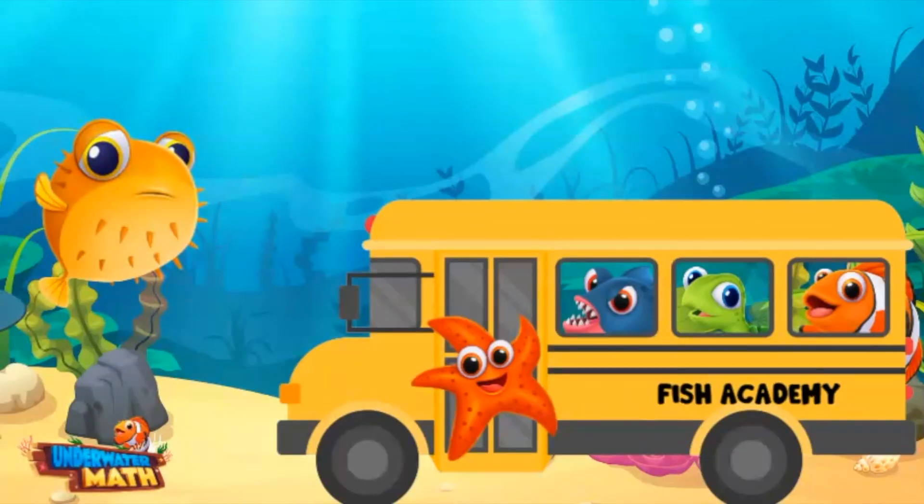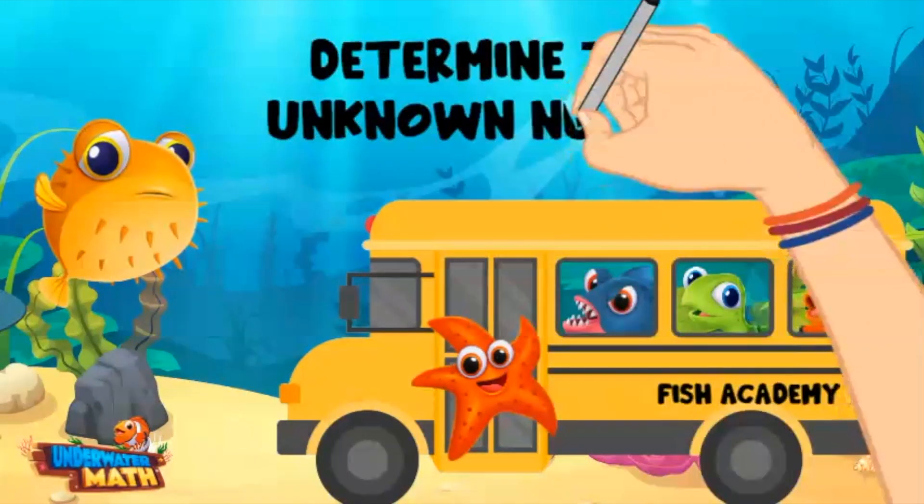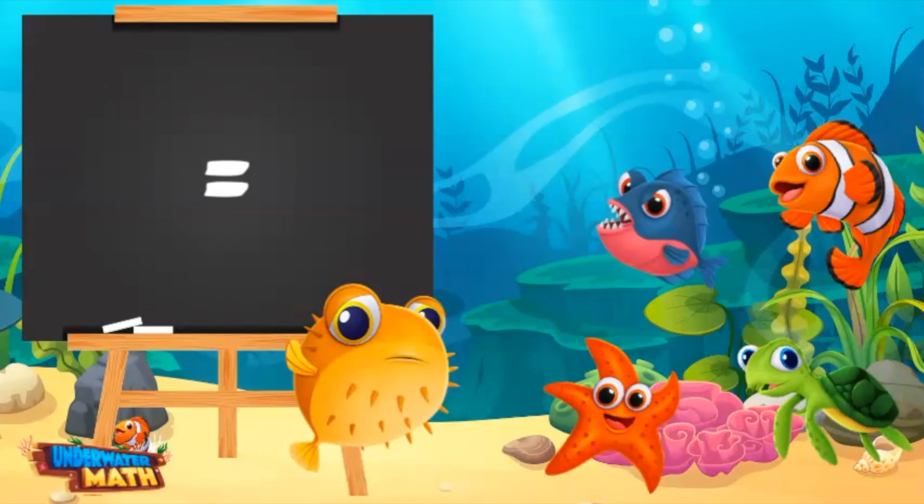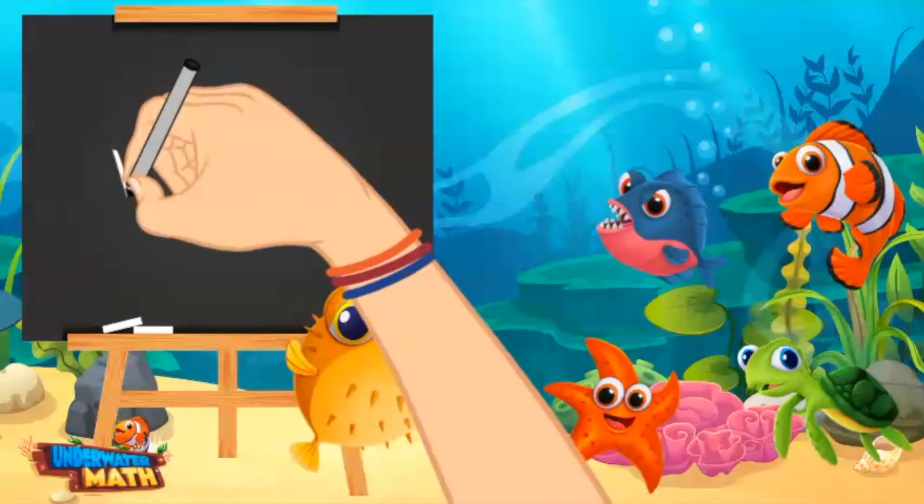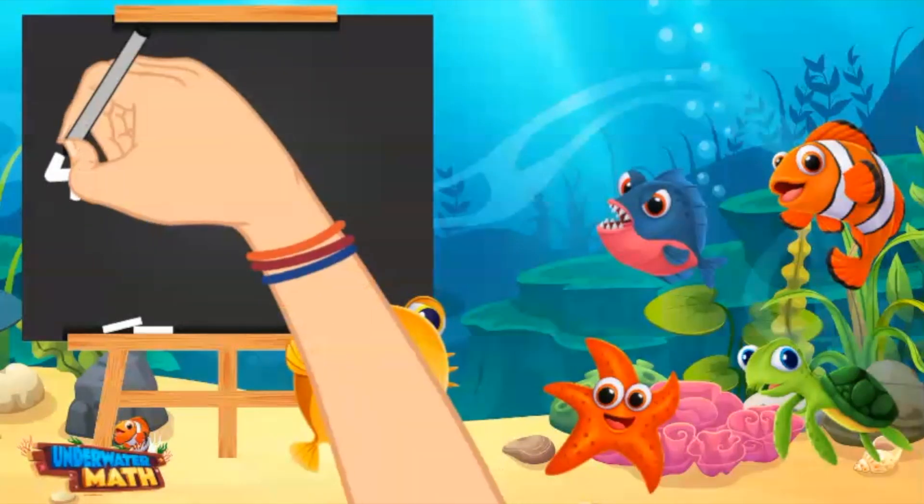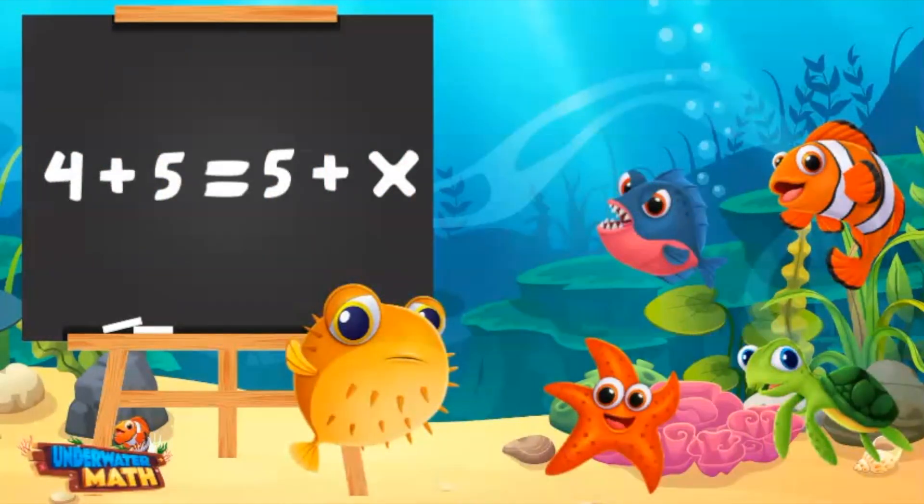Welcome class to another day of learning. Today's topic is determining unknown numbers. Who knows what this sign means? That's an equal sign. It is used in equations. The right side of the equation and the left side of the equation must have the same value. Right you are. Here is an equation: 4 plus 5 equals 5 plus x.